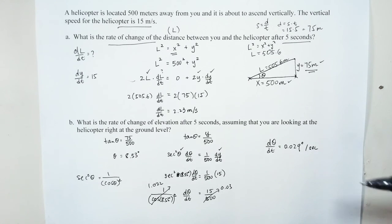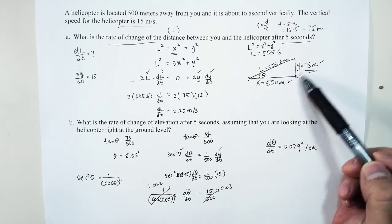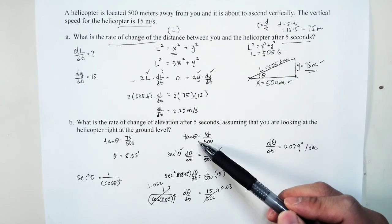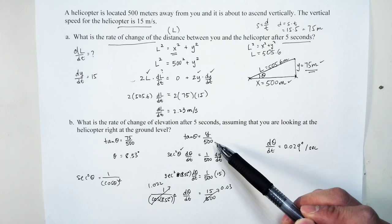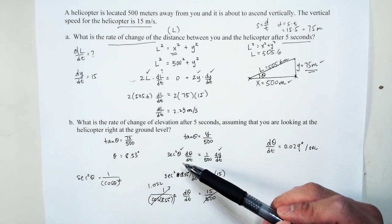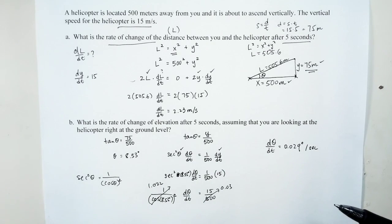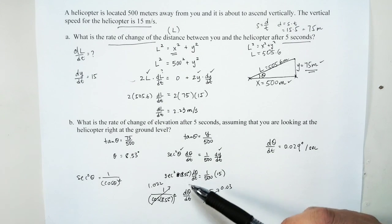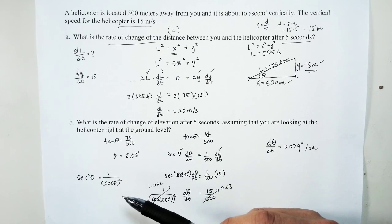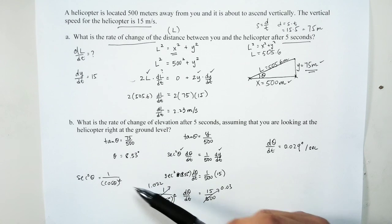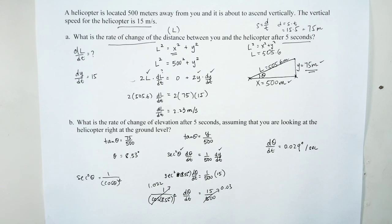For Part B, the key is identifying the relationship that connects the angle and the given sides — tangent is a good choice here. Make sure you know how to calculate sec²(θ). If you don't have a secant button, use the identity sec²(θ) = 1/cos²(θ) and solve it algebraically.